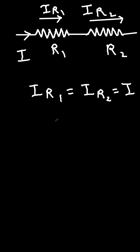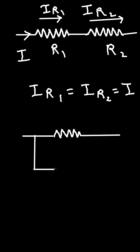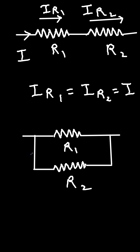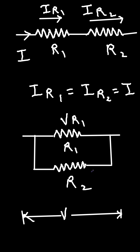In a parallel circuit, let's say this is resistor R1 and this is resistor R2 connected in parallel. The voltage across them is V. From here to here, the voltage will remain the same. So VR1 is equal to VR2 is equal to V.